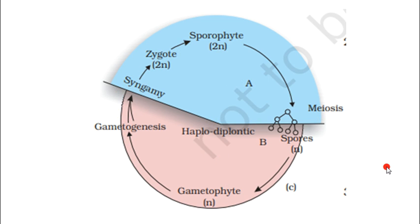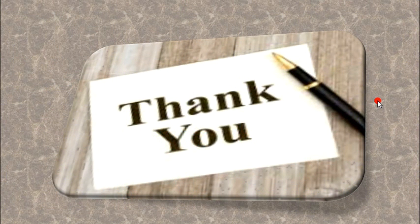In the haplodiplontic diagram you can see both sporophytic and gametophytic phases. Gametogenesis occurs, the zygote forms (2n sporophyte), meiosis occurs, and the gametophyte forms again. This completes Chapter 3 — Plant Kingdom — where we have learned about all plants. In the next video we will study Chapter 4: Animal Kingdom. Thank you, and Jai Swaminarayan.